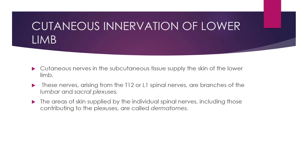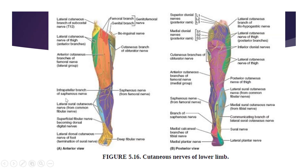The nerves are branches of the lumbar and sacral plexus. The areas of skin supplied by individual spinal nerves, including those contributing to the plexus, are called dermatomes. You should know what a dermatome is — the area of skin supplied by an individual spinal nerve is called a dermatome. Here they have shown dermatomes in the lower limb, colored with different colors.